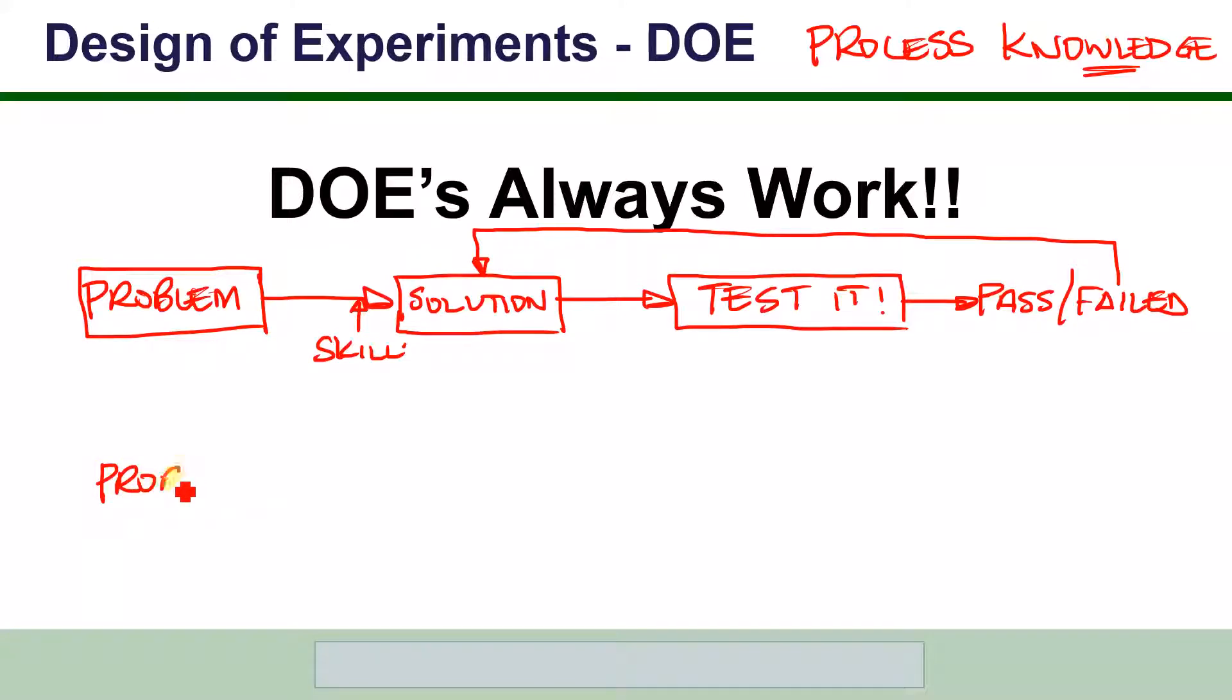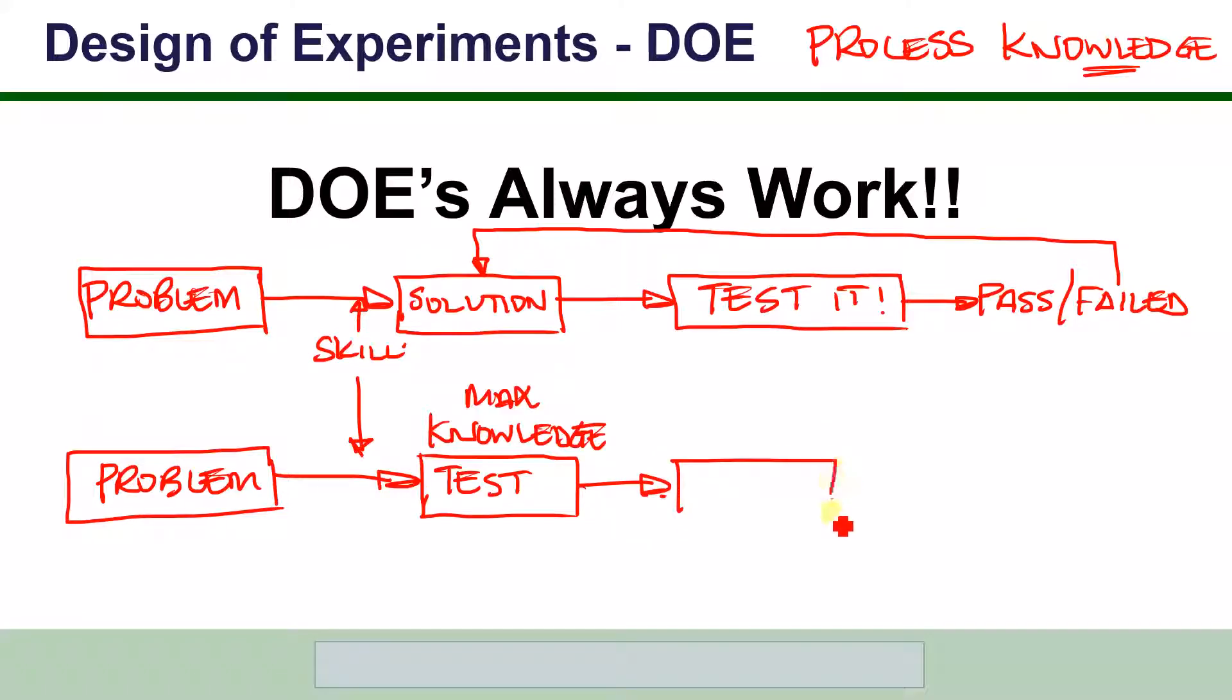When you do a DOE, it's very different because we're still going to use your skill, but I don't use the skill to design the solution. I use the skill to design the test to get the maximum knowledge. Once we've got maximum knowledge out of the test, then maybe we can design a solution. There will always be maximum knowledge coming out of the test, and therefore the designed experiment always works.